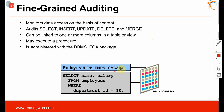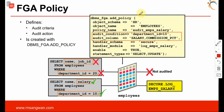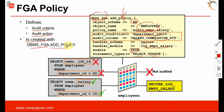For example, to create a policy called 'audit_emp_salary', where the audited statement is SELECT name, salary FROM employee WHERE department_id = 100, you use DBMS_FGA.ADD_POLICY with: object_schema = 'HR', object_table = 'EMPLOYEES', policy_name = 'audit_employee_salary', audit_condition = 'department_id = 10', audit_column = 'salary, commission_percentage', handler_schema = 'SECURE', handler_module = 'log_employee_salary', enable = TRUE, statement_type = 'SELECT, UPDATE'. This package defines what you want to audit — this is the fine-grained policy.